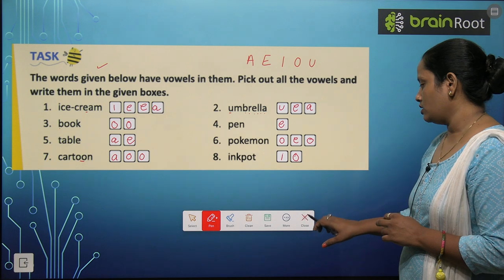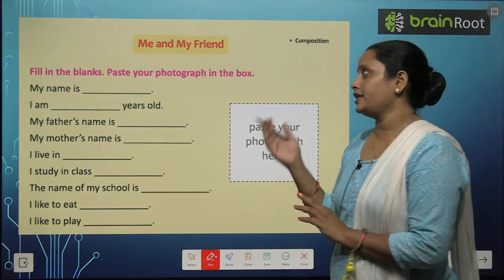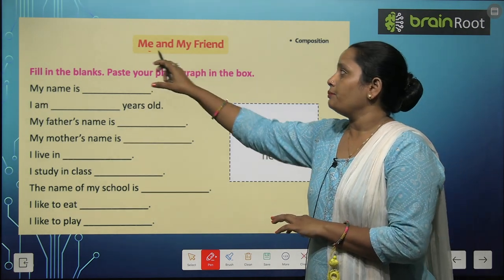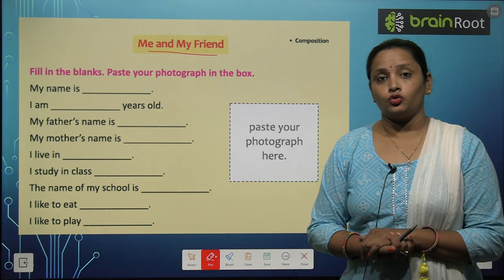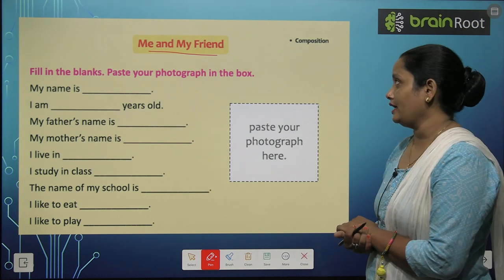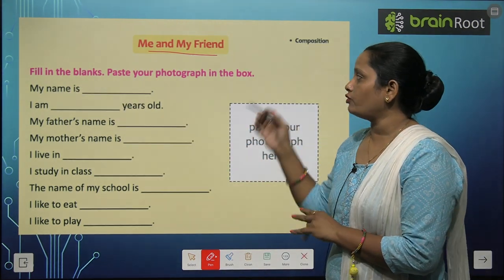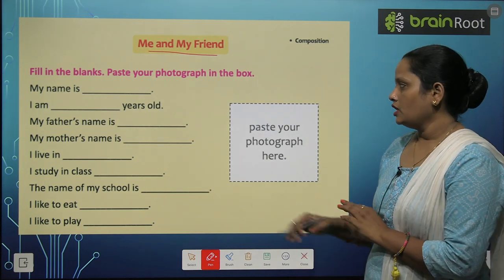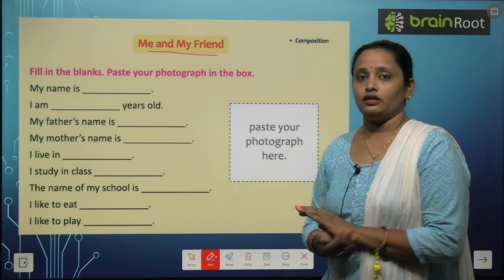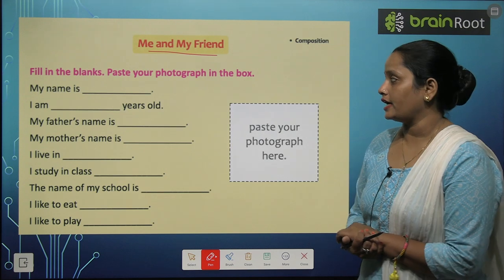I hope children, you understood vowels and consonants. Here is another exercise given in your book which is called 'Me and My Friend.' In this exercise, you have to write about yourself and your friend. Fill in the blanks and paste your photograph in the box.